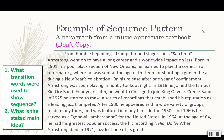'From humble beginnings, trumpeter and singer Louis 'Satchmo' Armstrong went on to have a long career and a worldwide impact on jazz. Born in 1901 in a poor black section of New Orleans, he learned to play the cornet in a reformatory where he was sent at the age of 13 for shooting a gun in the air during a New Year's celebration. On his release after one year of confinement, Armstrong was soon playing in honky tonks at night. In 1918, he joined the famous Kid Ori band. Four years later, he went to Chicago to join King Oliver's Creole band. In 1925, he started to make a series of recordings that established his reputation as a leading jazz trumpeter. After 1930, he appeared with a wide variety of groups, made many tours, and was featured in many films.'